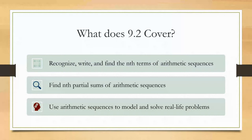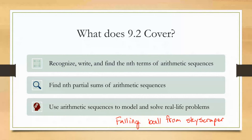One of the problems on the application assignment involves a falling object dropped from a skyscraper. There is a similar problem in the textbook in 9.2, and it's actually an odd problem, which means you can look at the work and learn how to do it. It has different numbers, but the steps are essentially the same — I think that's problem two or three.